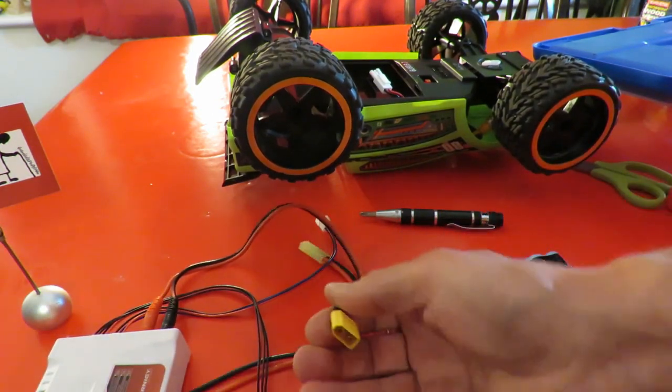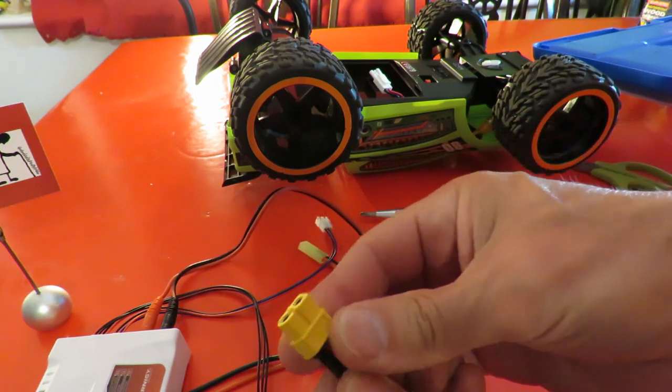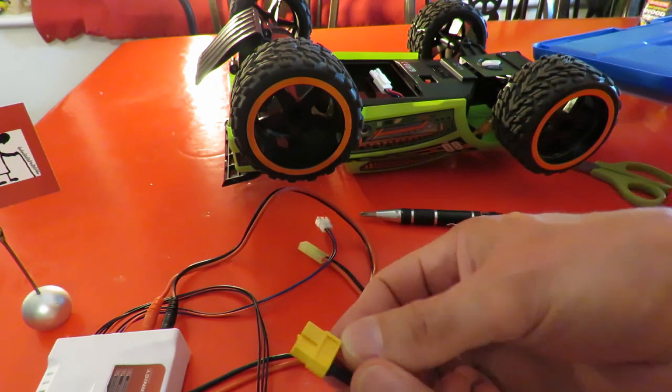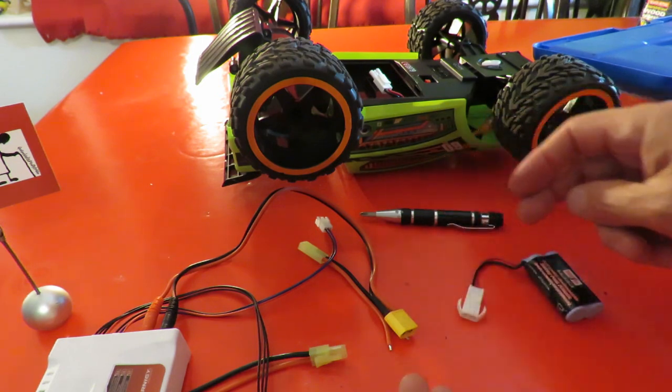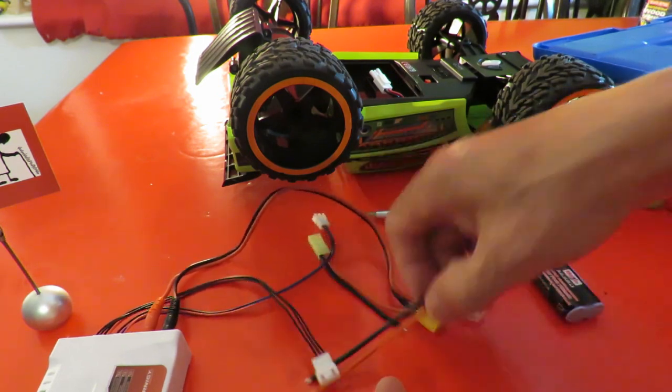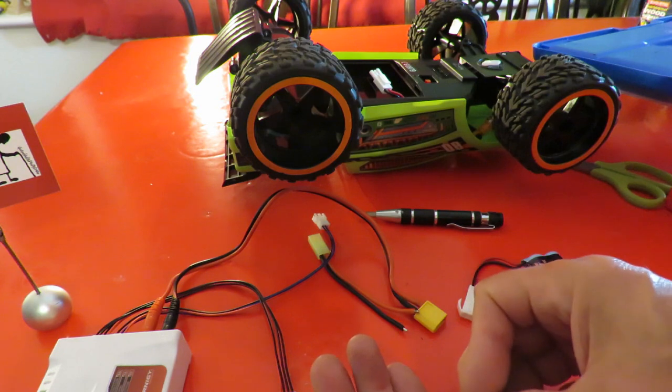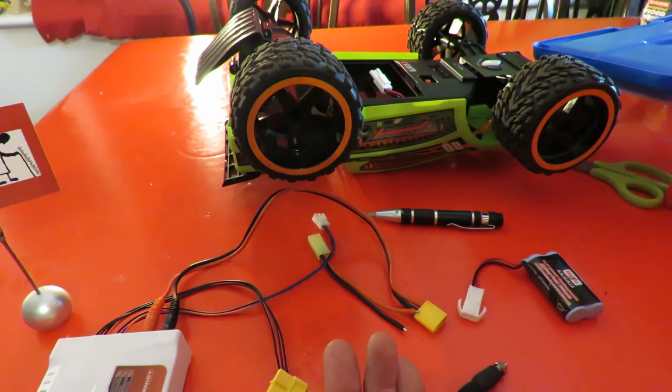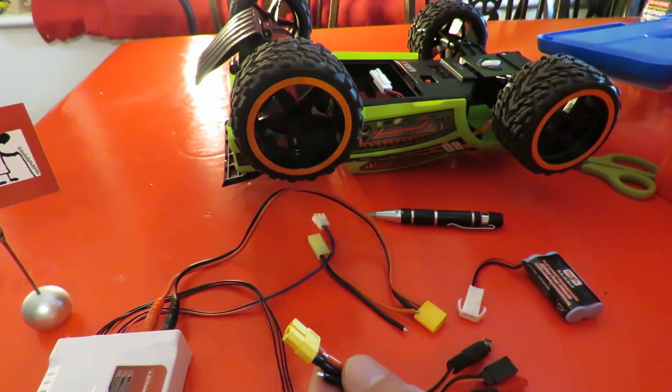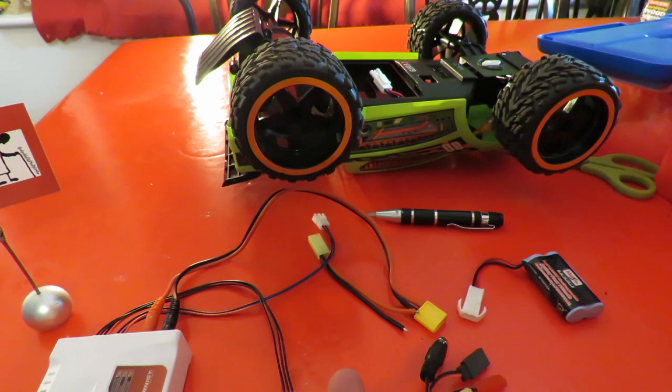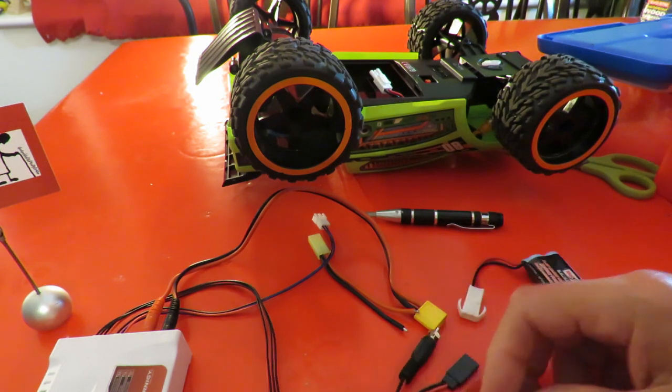So the easiest one to solder it to would be one of these XT60s. So now we need one of them onto there. So I'll go and do that, solder that on so I've got an adapter.